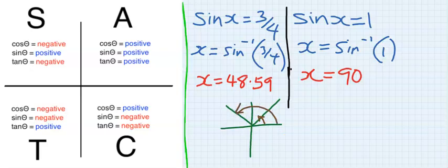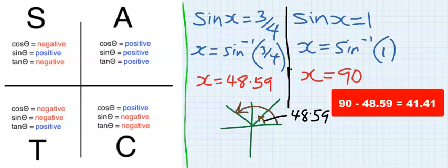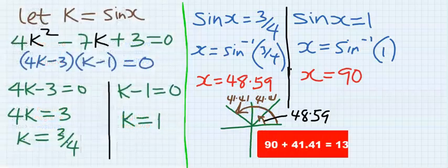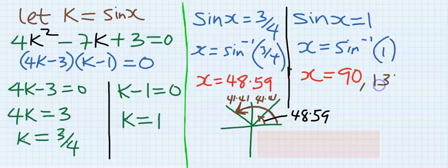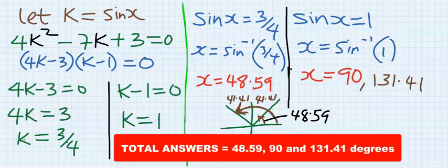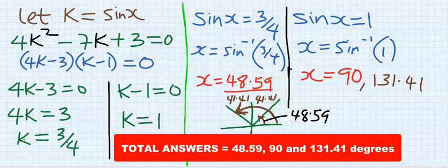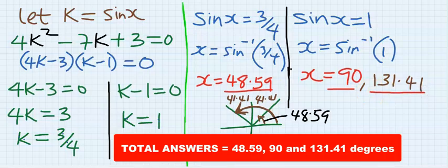So our angle is going to be this, and our angle will also be this. This angle here is 48.59, and this remaining angle will be 41.41. Hence our second angle will be 90 degrees plus 41.41, and our next answer will be 131.41 degrees. So all our solutions to the problem are 48.59, 90 degrees, and 131.41.